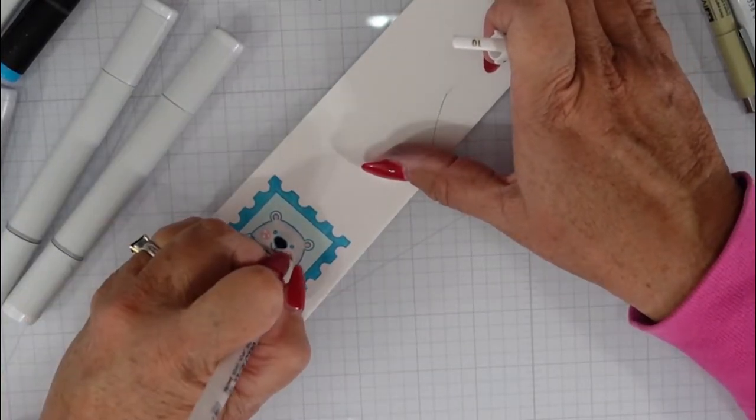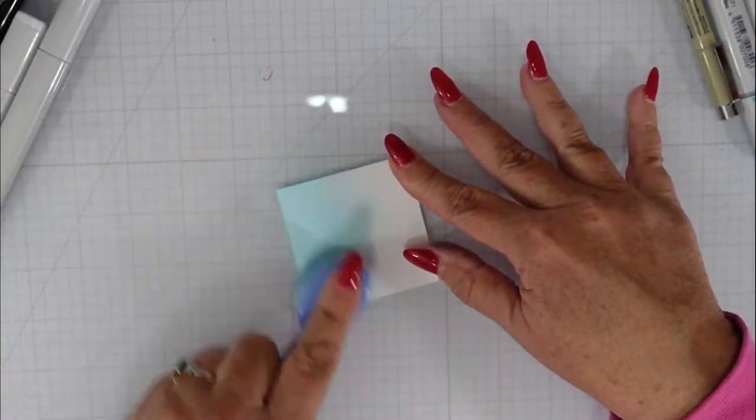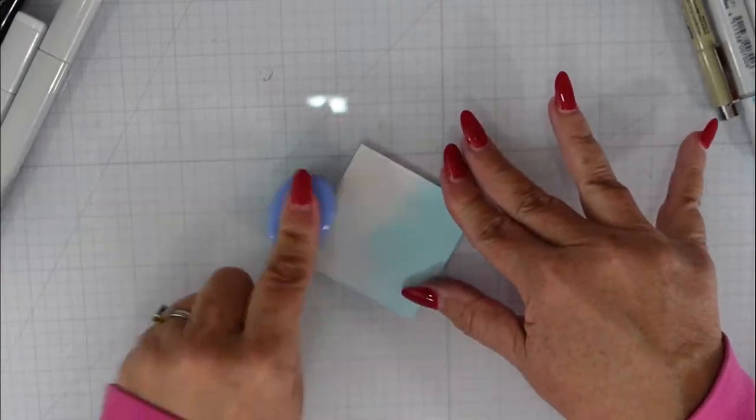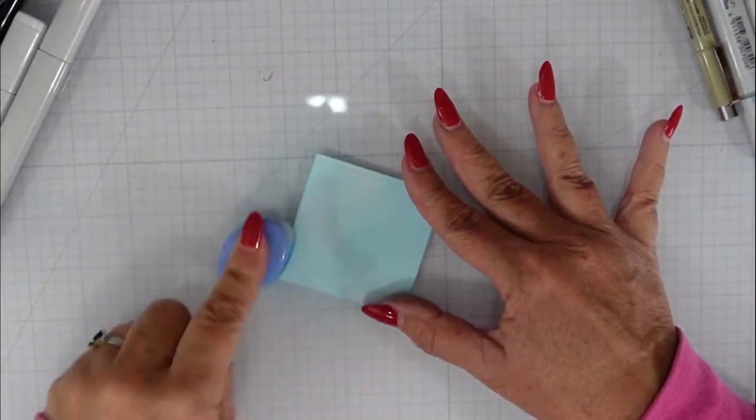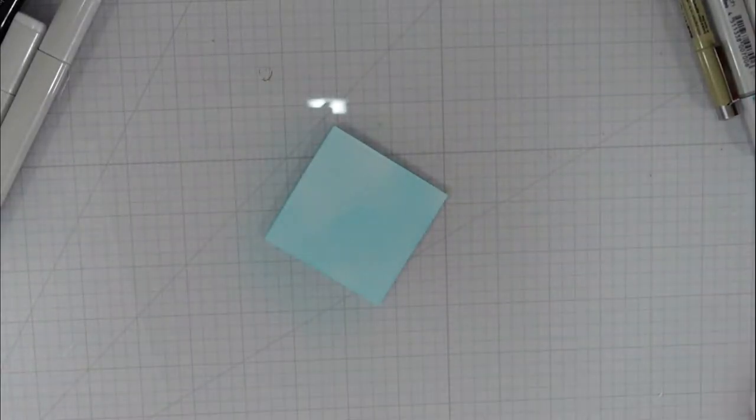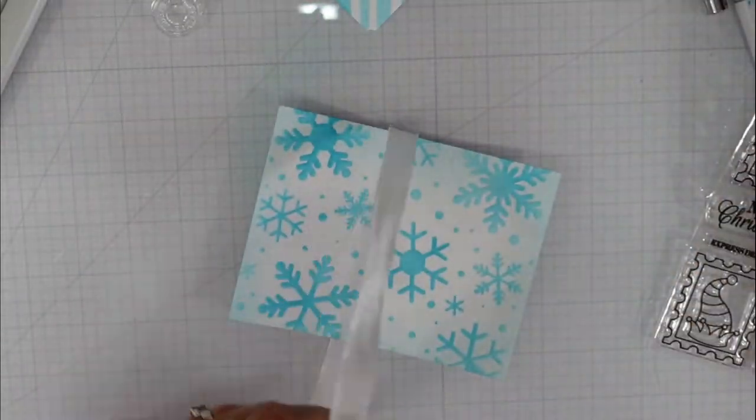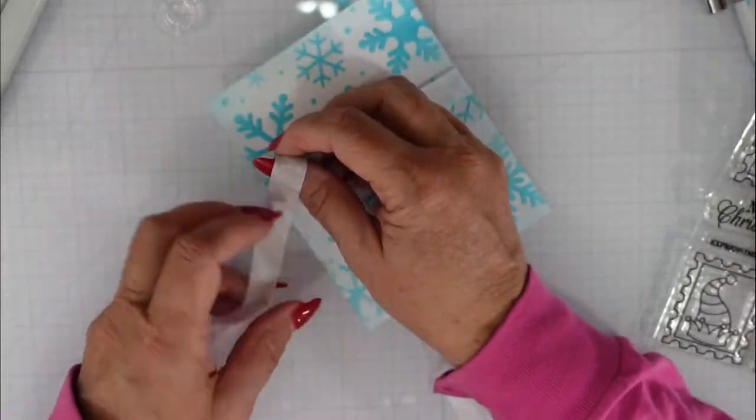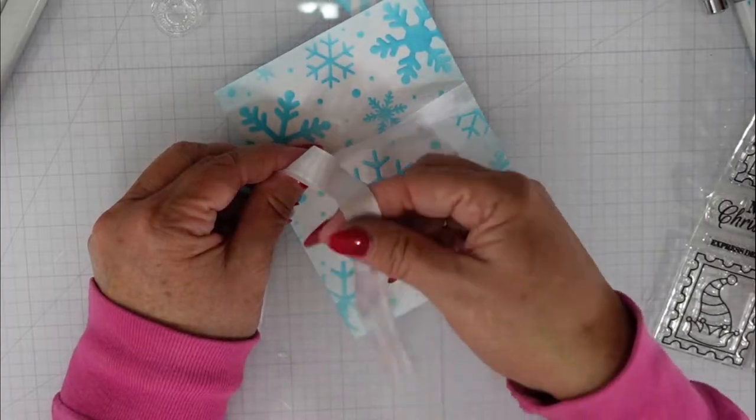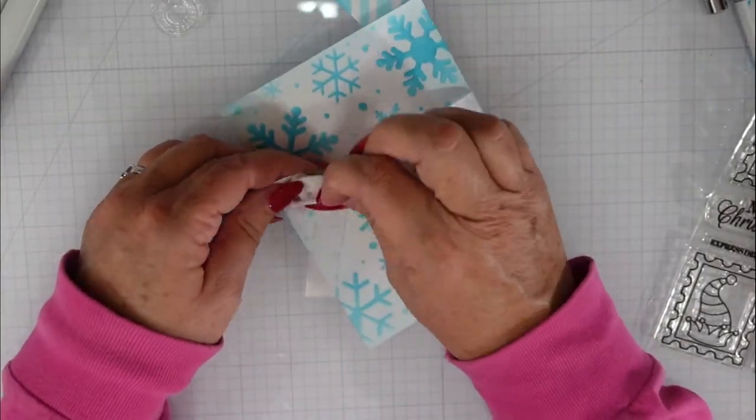I do not have the coordinating dies for this set, but I did use my Brother Scan and Cut to cut it out. There are coordinating dies that are available, so make sure that you check the store for that. I have a piece of cardstock that I cut using one of the square dies in my stash, and then I use just the ink that was left over on my brush. I try to get as much use of that ink as I possibly can, and I just colored over it using that blending brush.